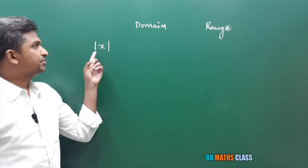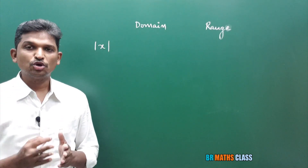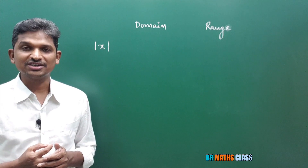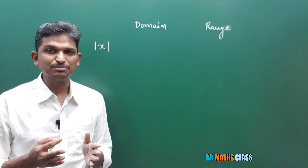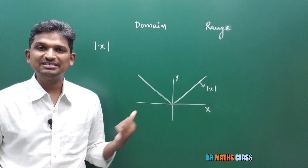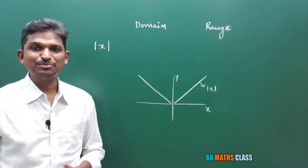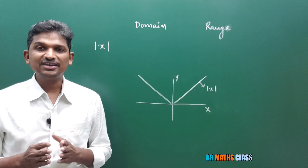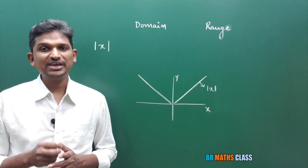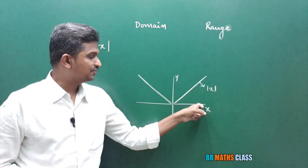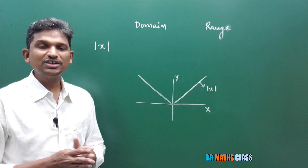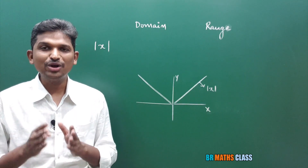First, the modulus function. What are the domain and range of the modulus function? You can easily state its domain and range if you can draw the graph of mod x. The graph of mod x is V-shaped — the victory symbol. To find domain, we observe the x-axis. This function is defined for all real numbers, so the domain of the modulus function is all real numbers.